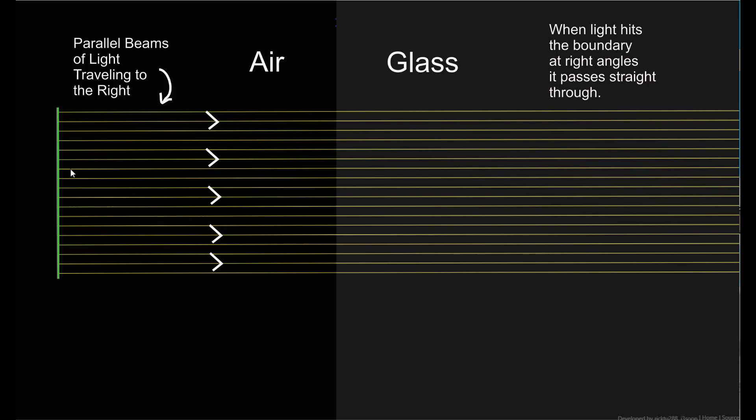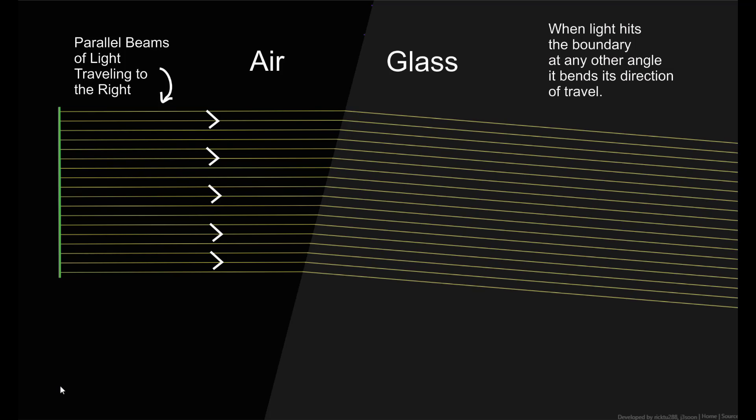Some of the light reflects, which is why sometimes we see a reflection in a clear glass window. But we are interested in this video in the light that passes through the glass. If the light hits at any other angle than a right angle to the glass, the light rays bend inward when they enter the glass. This happens because the light slows down when it enters the glass, but I won't get into that physics right now.